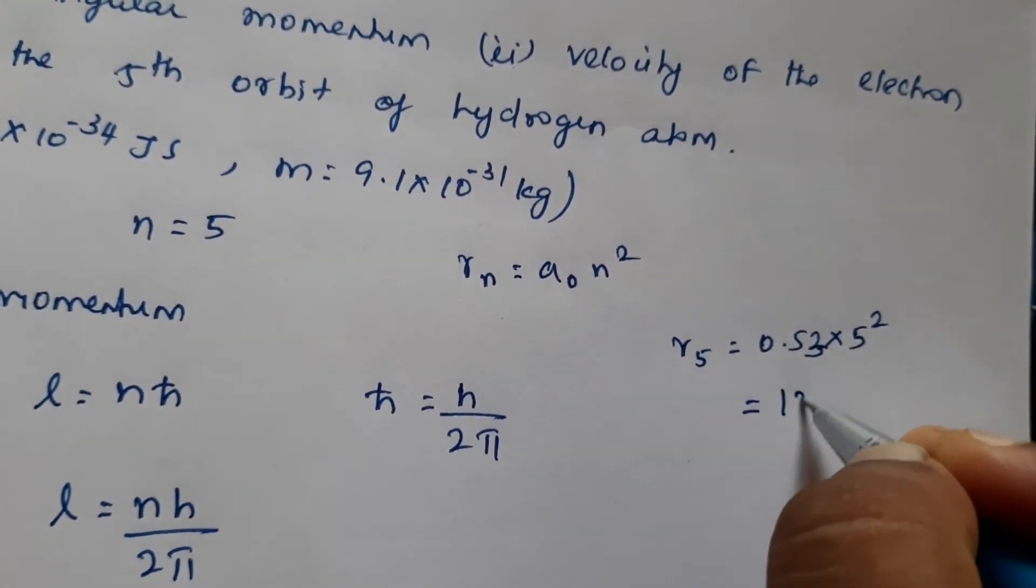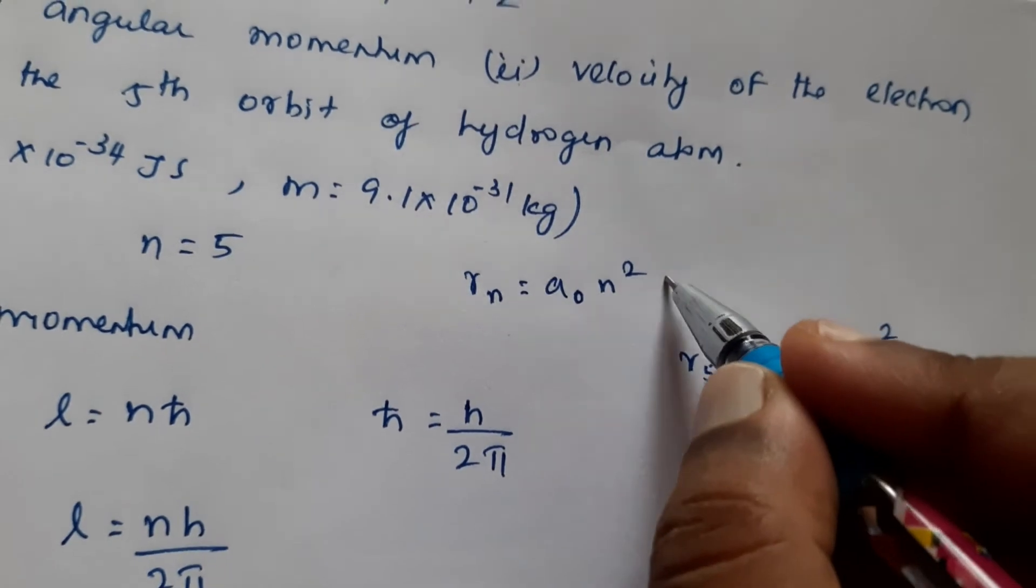So if you multiply this, you will be getting it as 13.25. This is Armstrong.